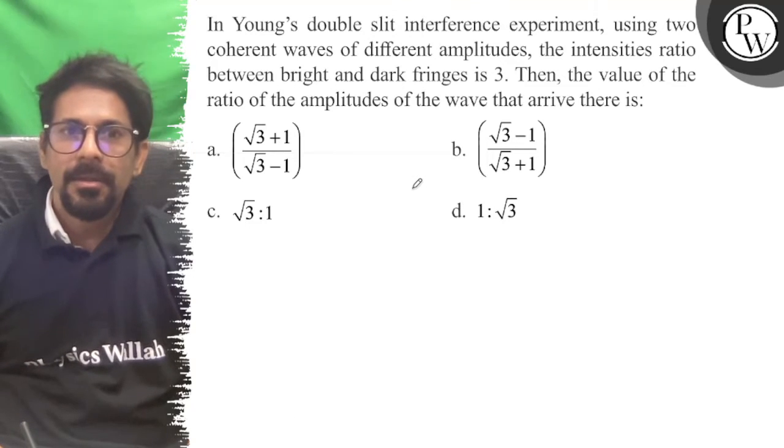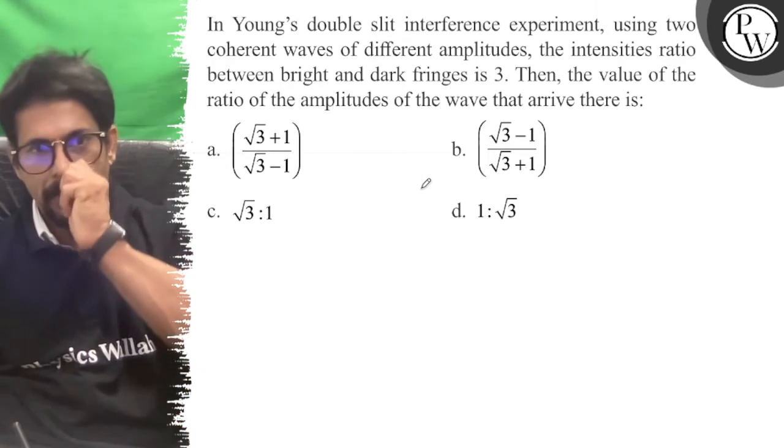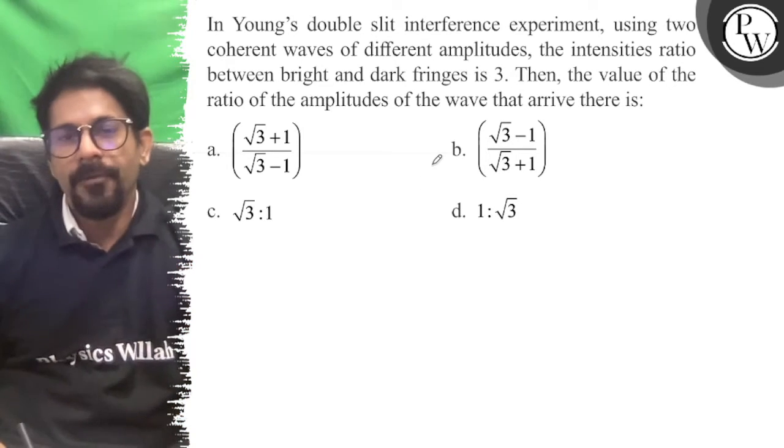Hello Bacho, let's see the question. In Young's double slit experiment using two coherent waves of different amplitudes, the intensity ratio is 3. Then, the value of the ratio of the amplitudes of the waves is: